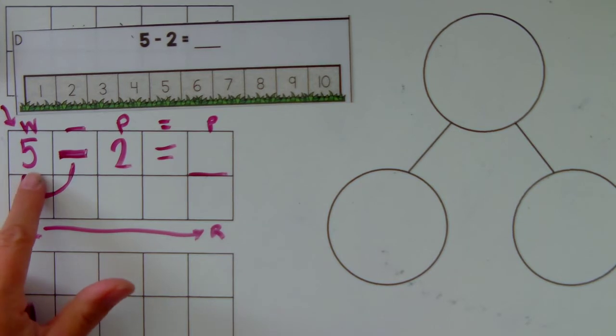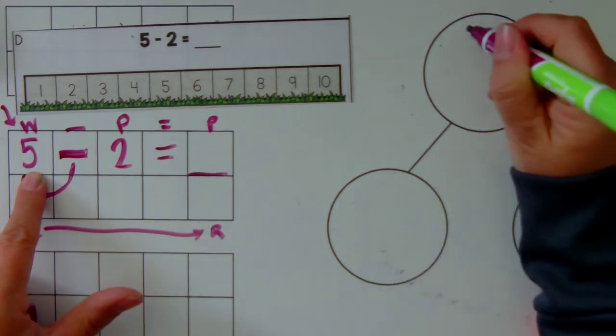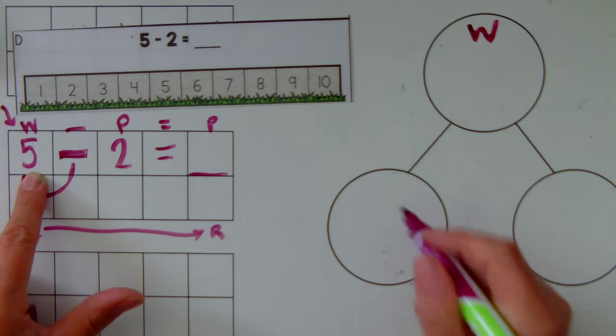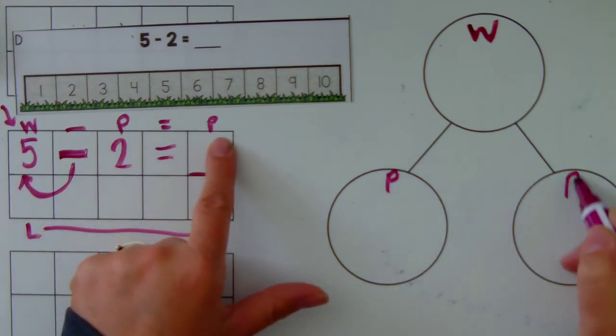So this is a whole over here with my number bond. There's my whole, my part, and the part.